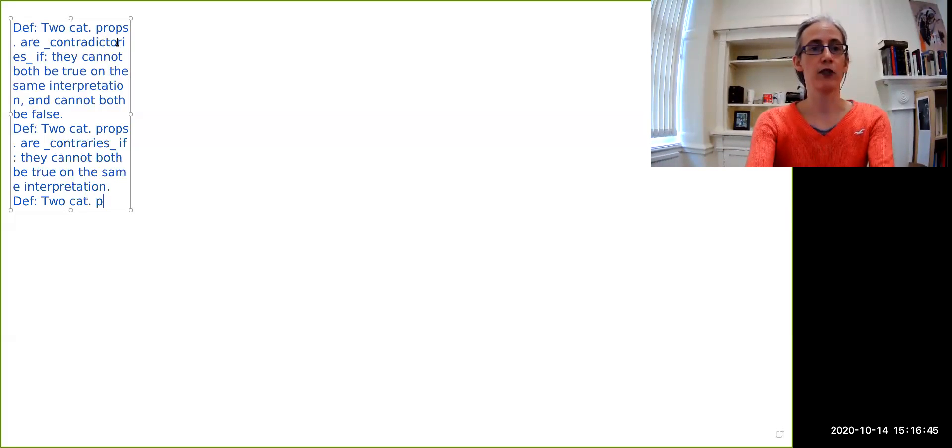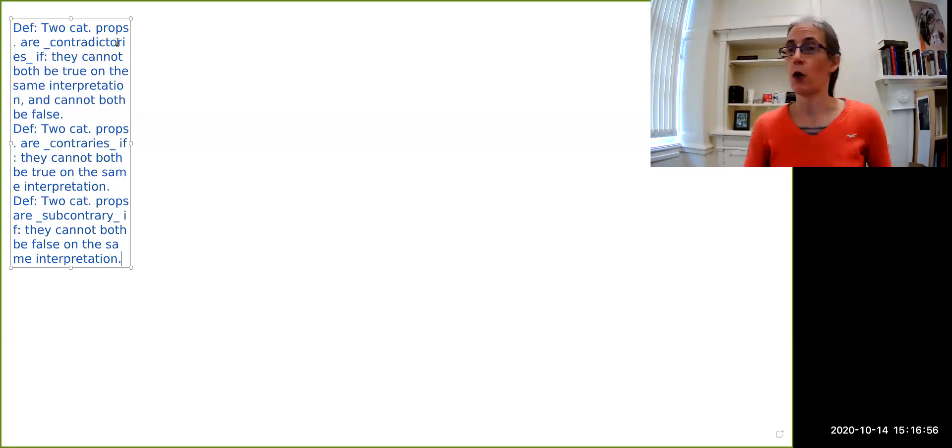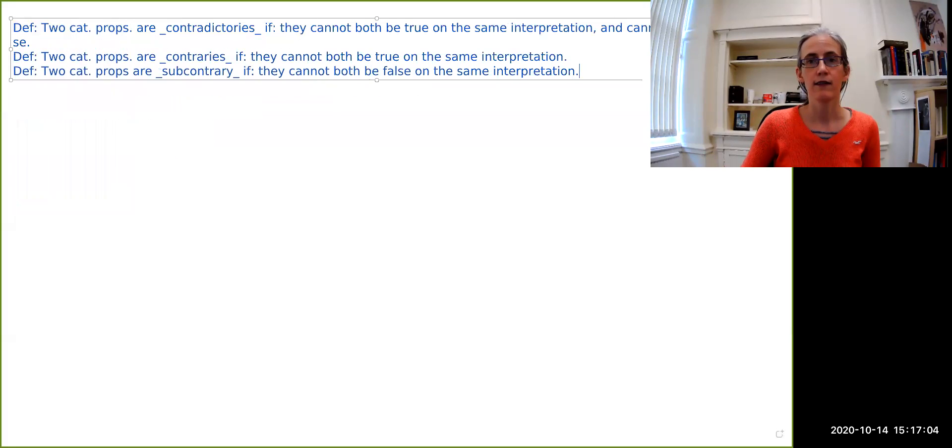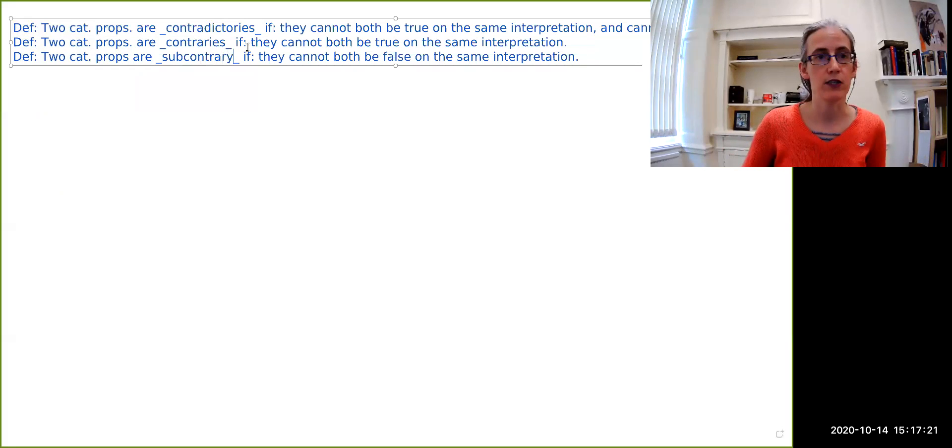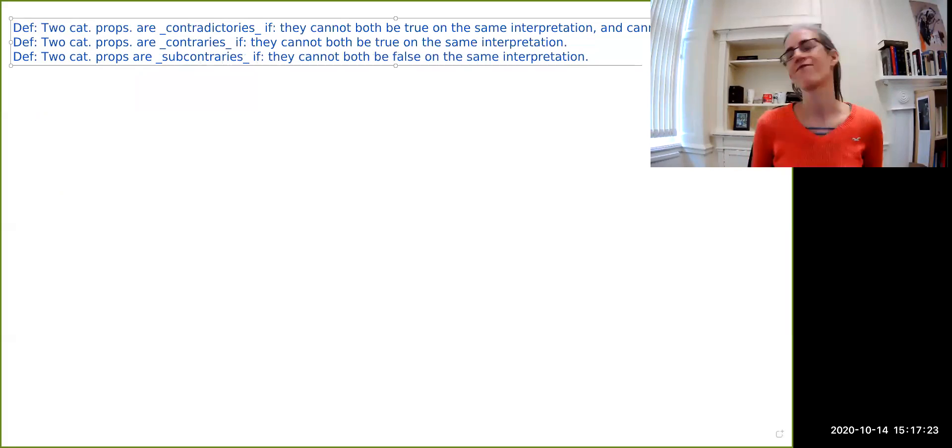So two categorical propositions are subcontrary if they cannot both be false on the same interpretation. So if you said that during my lingering pause, give yourself a gold star because that is exactly right. The notion of being subcontrary is a weaker notion than being contradictory. And indeed, if you take contrary and subcontrary and put them together, you get contradictories.